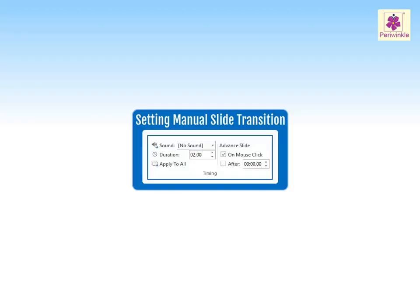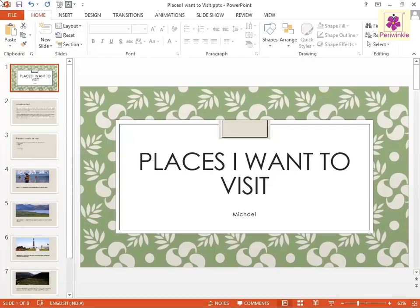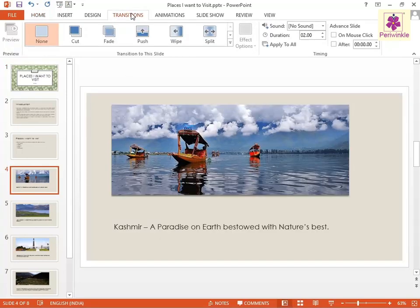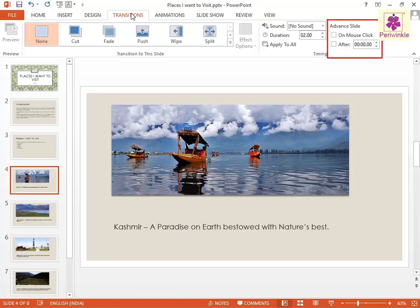In MS PowerPoint, you can set the manual slide transition. Select the required slide and click on the Transitions tab. Now, from the Timing group under the Advanced Slide section, select the On Mouse Click checkbox.